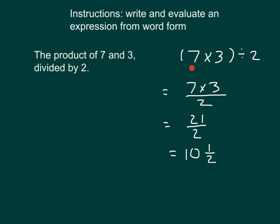This expression — 7 times 3 divided by 2, which is the product of 7 and 3 divided by 2 — does evaluate to 10 and a half. So we have this in words, we have this written out as an expression, and by going through our steps and process, we have evaluated this expression.